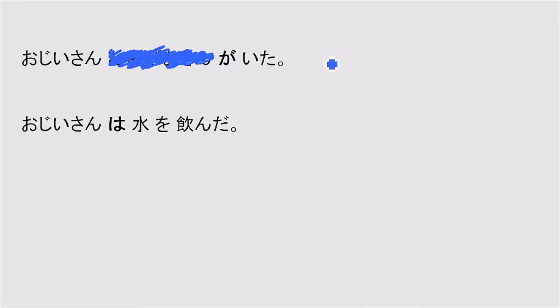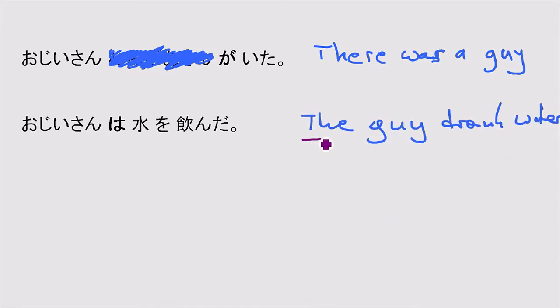In English, you would say, let's call it guy, not a grandfather. You would say there was a guy and the guy drank water. The important point in English is that you also make the difference. You say, when you introduce something, you say a. There was a guy. You don't say there was the guy. I mean, in some situations, but not in this situation. It's a different meaning.